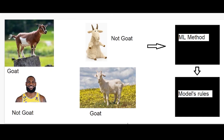I give it a picture, and with that I also give it the label. So it'll see that this one is a goat, this one is not a goat, this one is not a goat, and this one is a goat. This gets passed as the data into the machine learning method — and there are many machine learning methods, so you just have to look at which one is going to work for your situation. You take the data, pass it into the method, and then the model will now learn some rules from this.